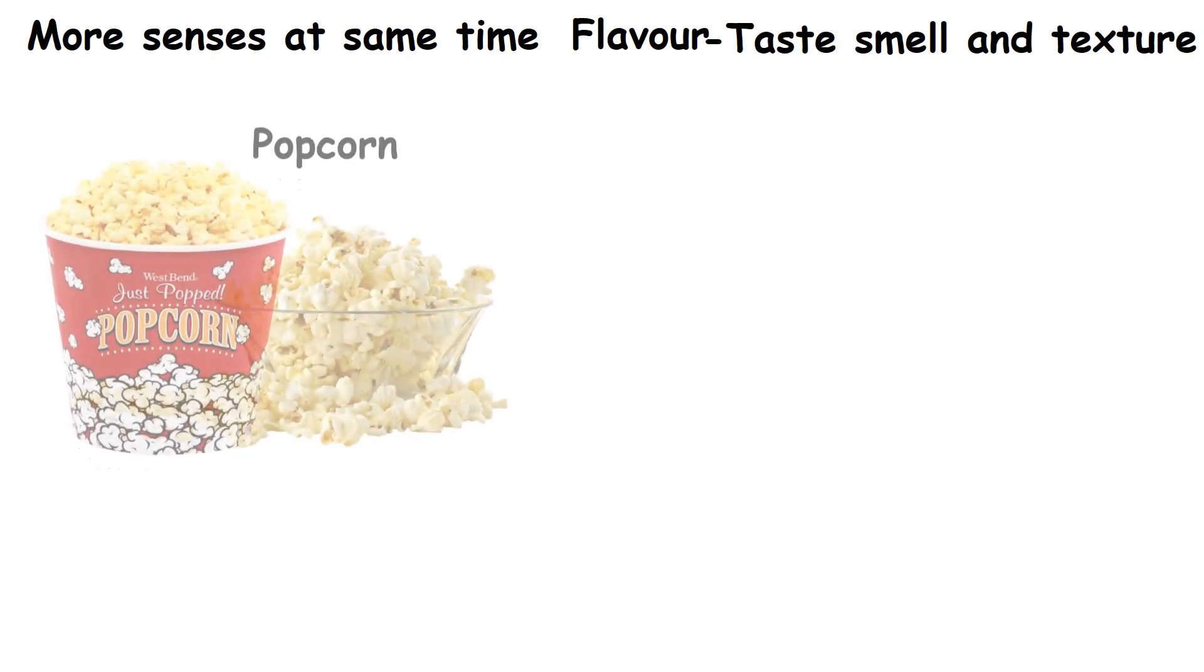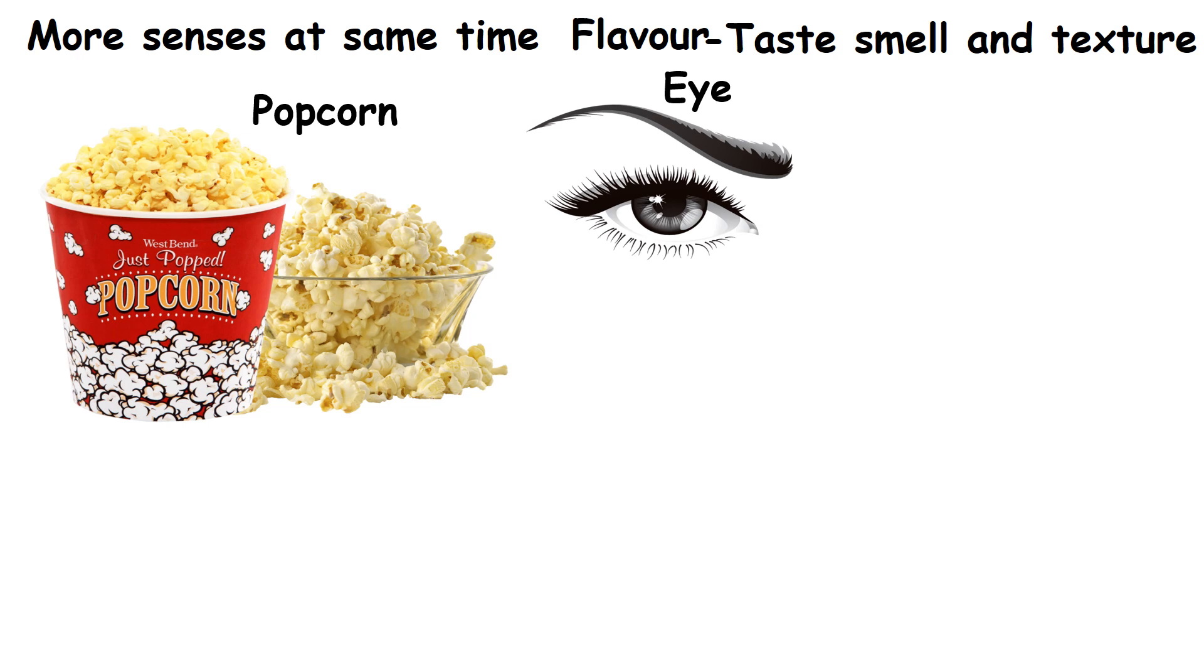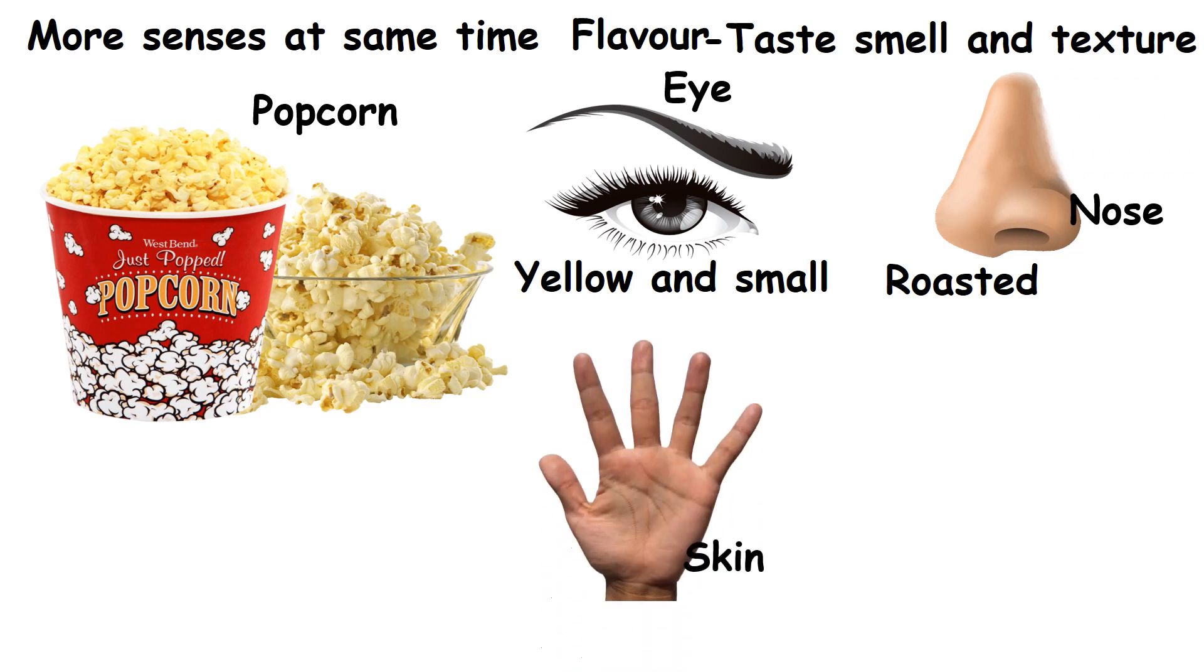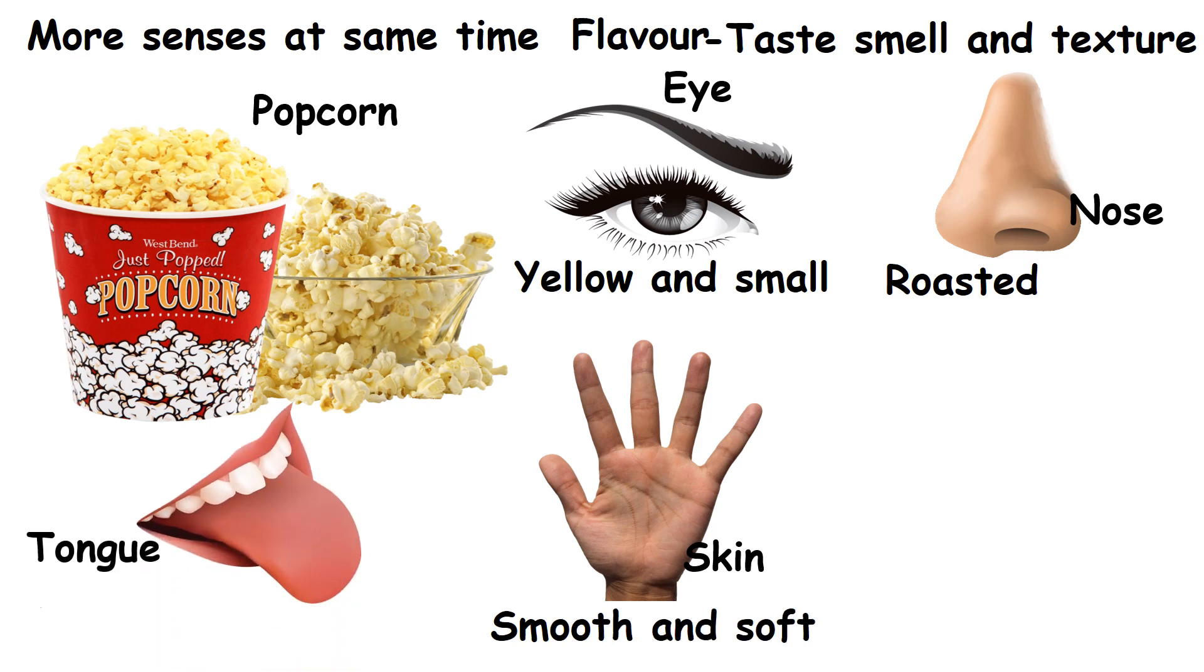For example, we can see popcorn with our eyes. It is yellow and small. We can smell its roasted flavor with our nose. We can feel its texture with our skin. It is smooth and soft. We can taste with the help of our tongue. It is salty and spicy. We can hear its crunch with our ears.